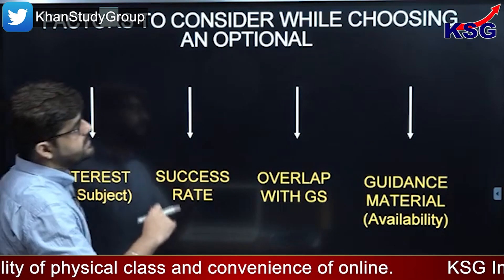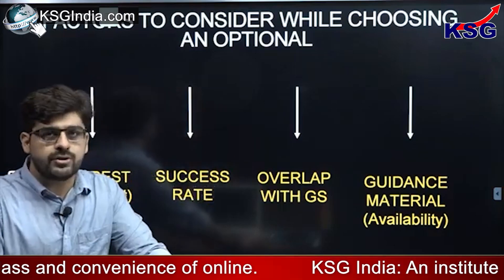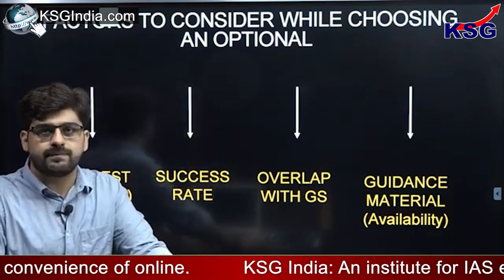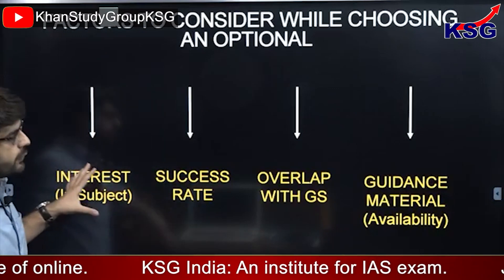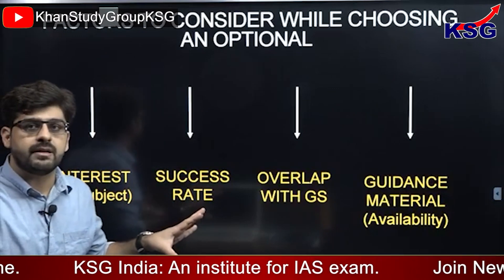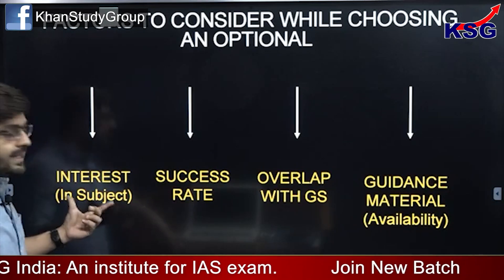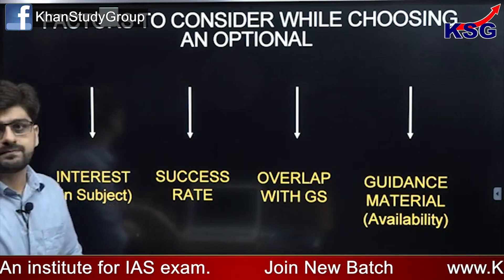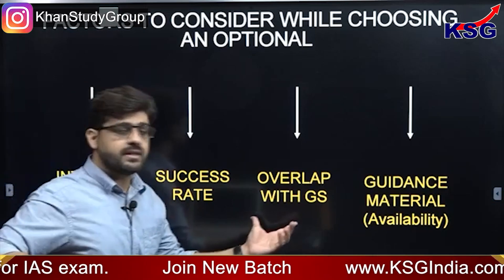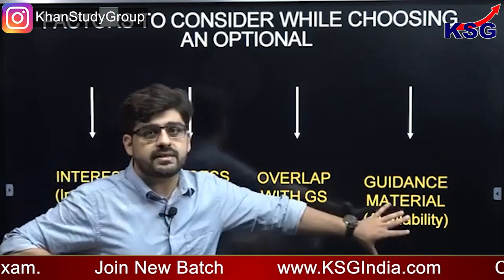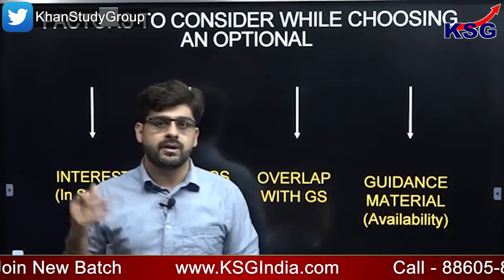Factors to consider while choosing an optional. Any optional you choose, these four should be the considerations which you take in mind: the interest in the subject, the success rate of the subject, the overlap with the general studies, and the guidance material — the availability of that particular aspect.